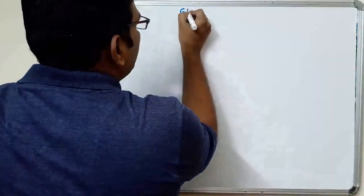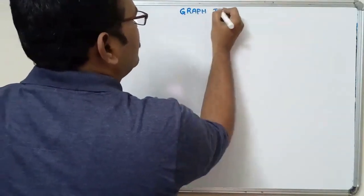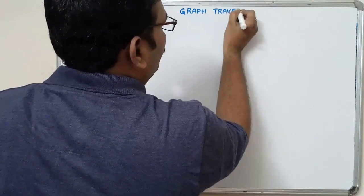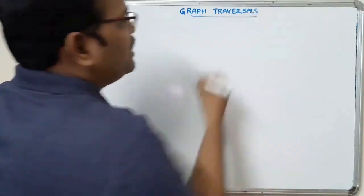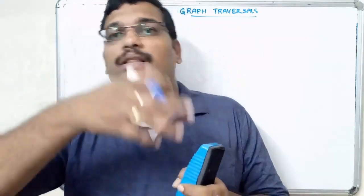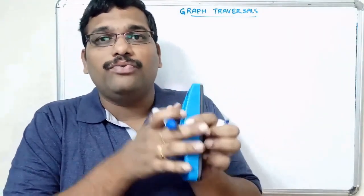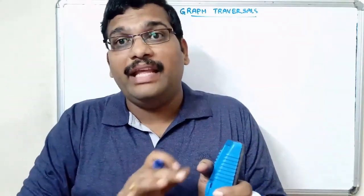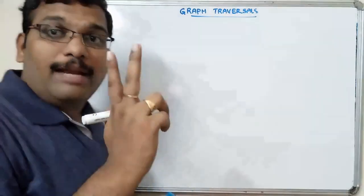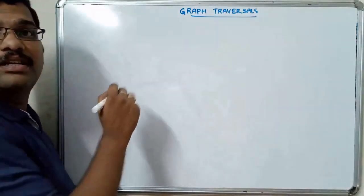So what is meant by traversals? Traversal means visiting all the nodes, that is traveling around all the nodes in the graph. Here we will not have any root node, so we can assume any node as a starting node. From that starting node we have to visit all the nodes without any repetition - every node of a graph should be visited only once. We have two types of techniques in graph traversal.